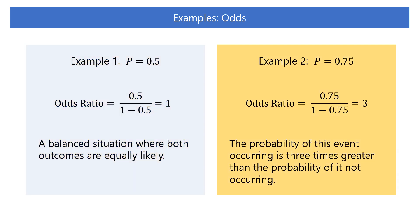When an event has a 75% probability of occurring, the probability that the event will not occur is 25%. In this case, the odds is 3. An odds of 3 means that the probability of this event occurring is 3 times greater than the probability of it not occurring.